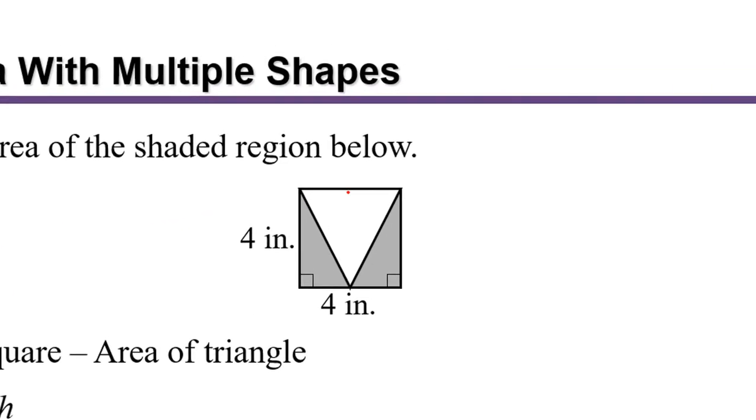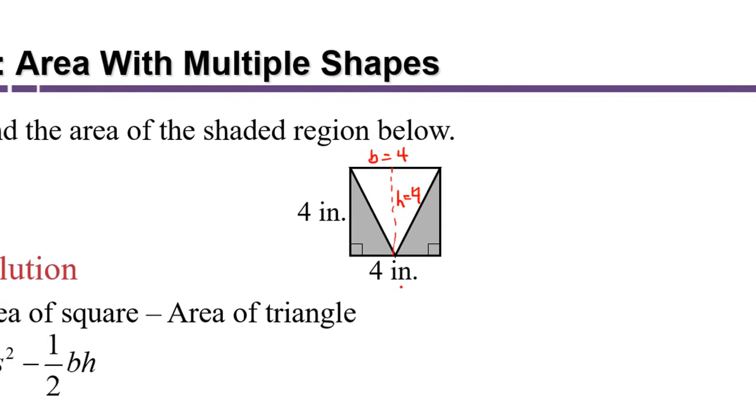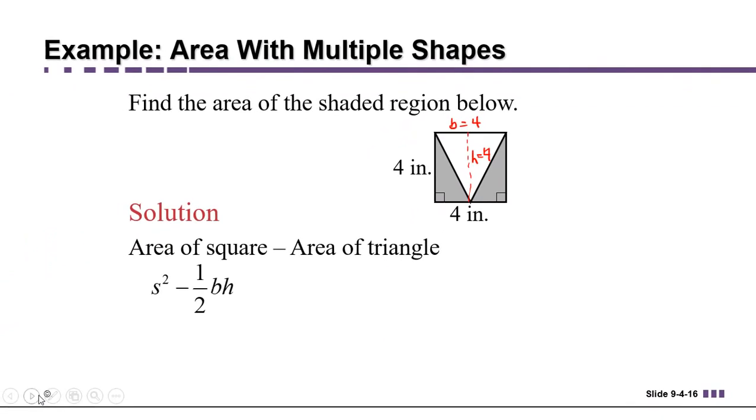Well, the height of this triangle is going to be the same as the side of length 4 there. And so is the base of this triangle. That's also a side of the square. So our base and our height are both 4 as well. So we get 4 squared minus one-half times 4 times 4. So that's going to be 16 minus 8, or 8 square inches.